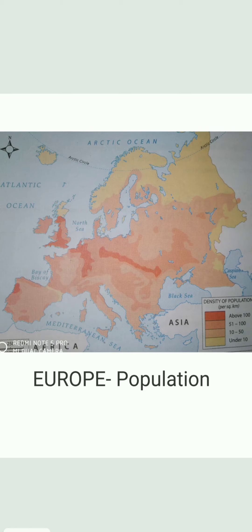Europe is a very densely populated continent with more than 70 persons per square kilometer. But this distribution of population is not even - it differs from place to place due to factors like relief. Relief means that at some places it is a plain land, at some places there is highland, and at some places there are mountains. So the distribution of population varies from place to place.